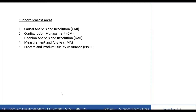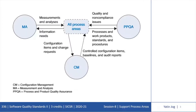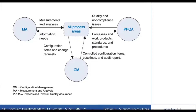The basic support process areas address fundamental support functions that are used by all process areas. Although all support process areas rely on other process areas for input, the basic support process areas provide support functions that also help implement several generic practices. This diagram provides a bird's eye view of the interactions among the basic support process areas with all other process areas.